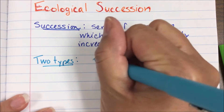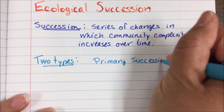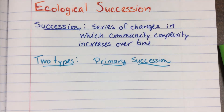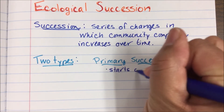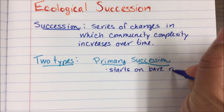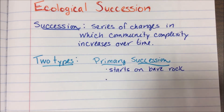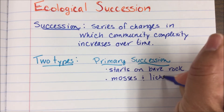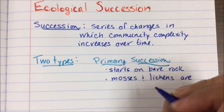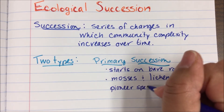We have primary succession. Primary succession — very basic. This starts on bare rock. You're going to have some starter species. Those starter species are going to be things like mosses and lichens, and we call those pioneer species. They're first on the scene.